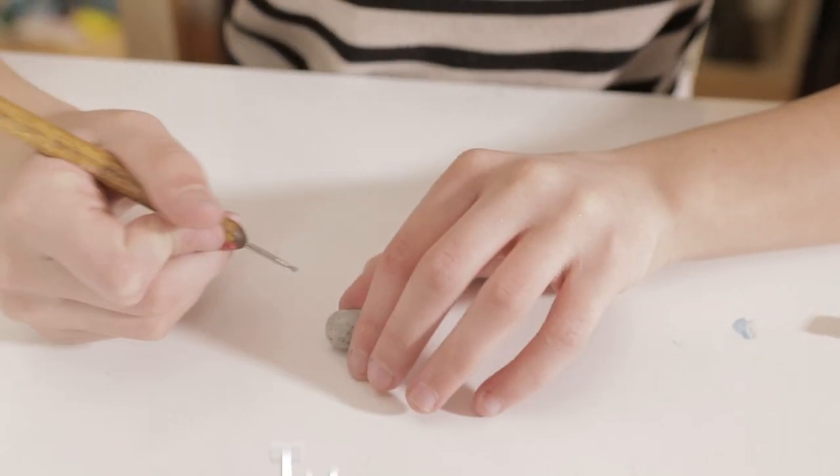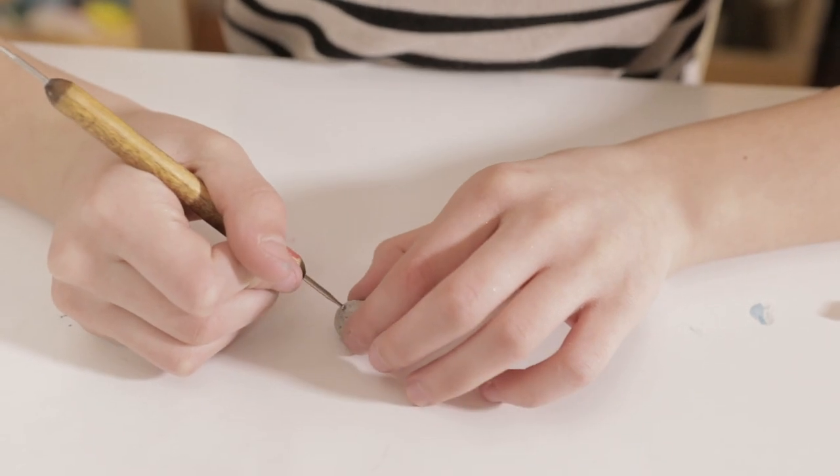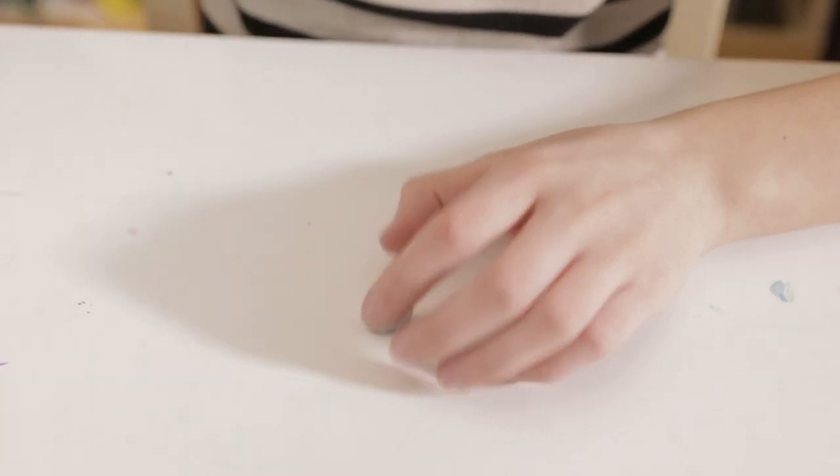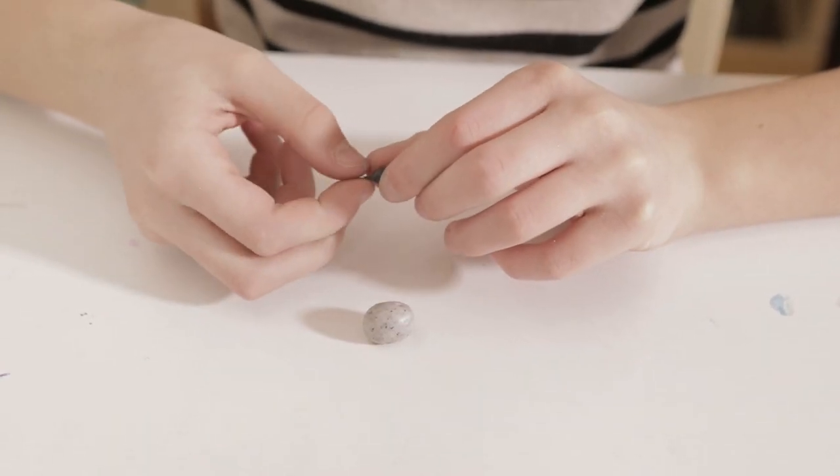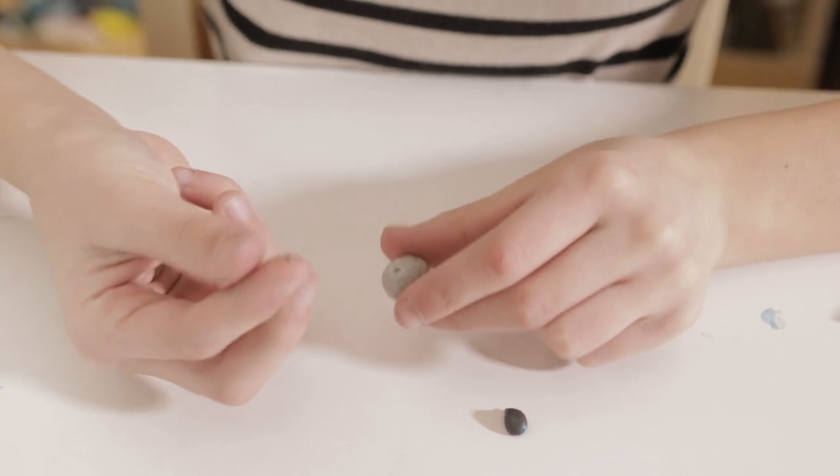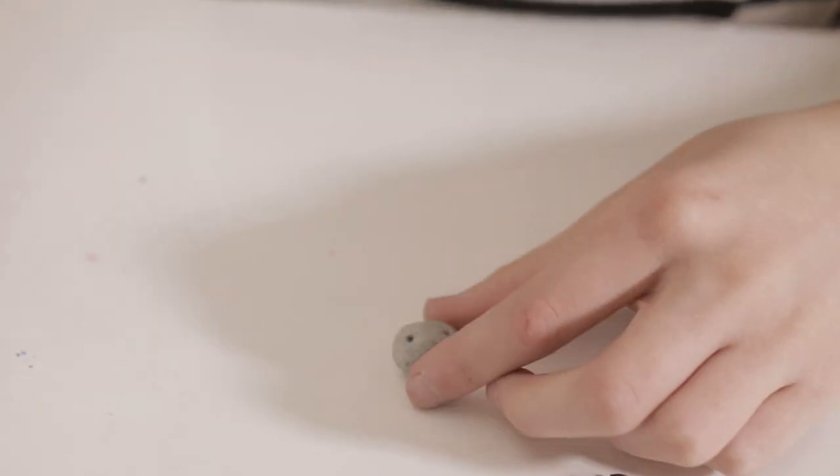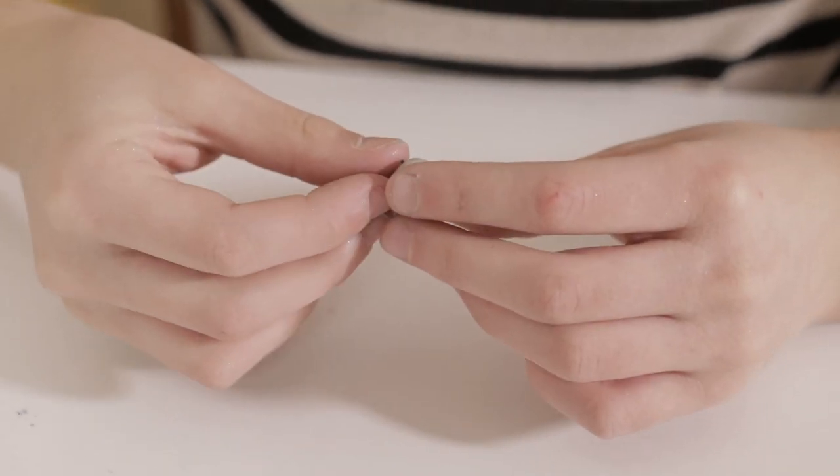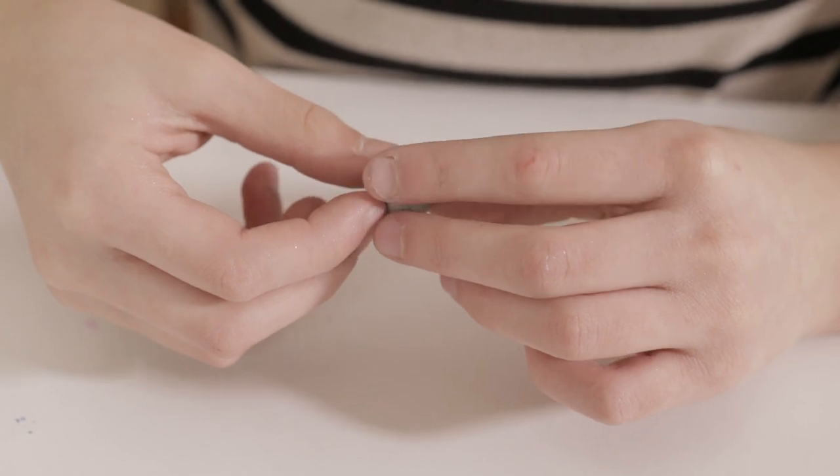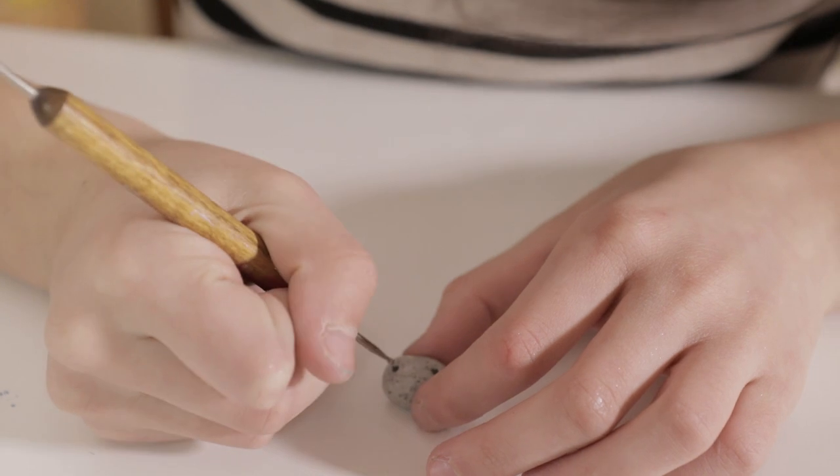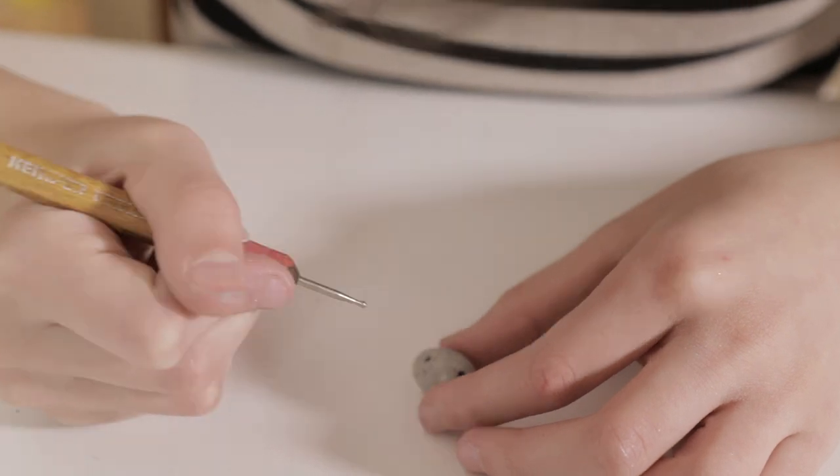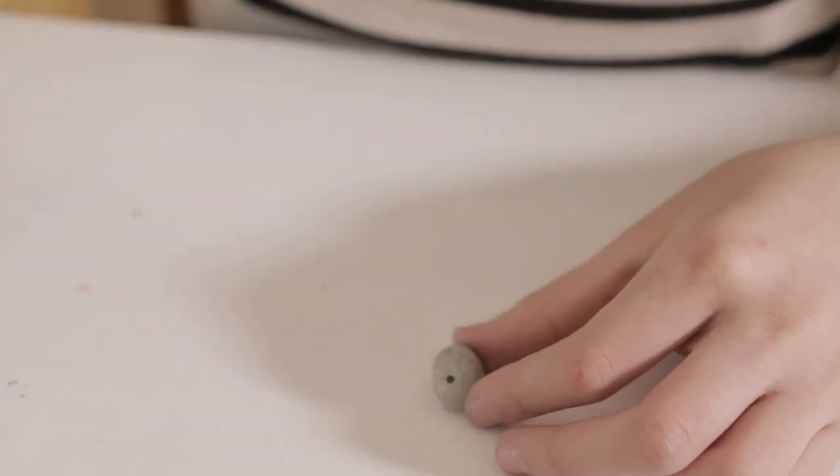And now, let's do the eyes. Take your dotting tool and just imprint two dots. Take your clay and make two very small balls. Try to put it in the eye, then take your dotting tool again and flatten it out. That way it actually stays in.